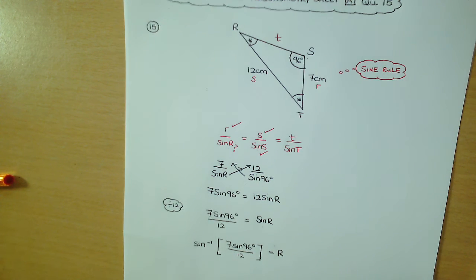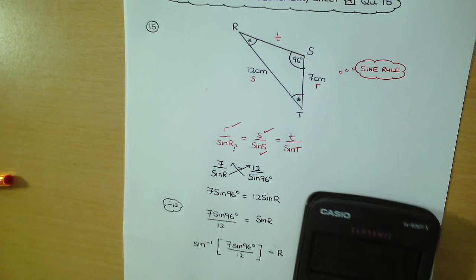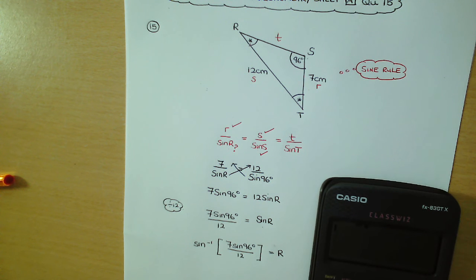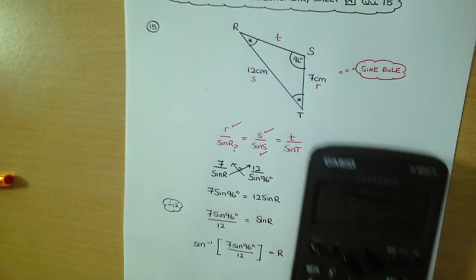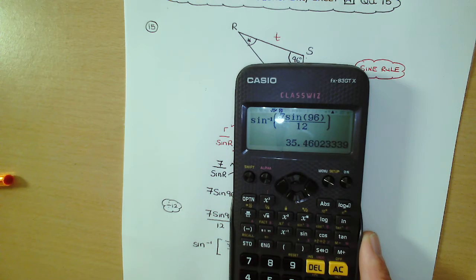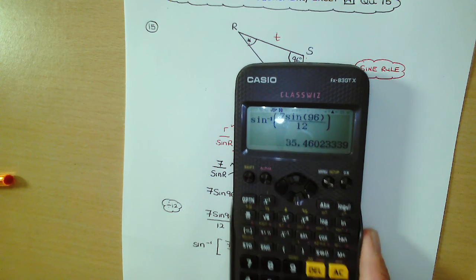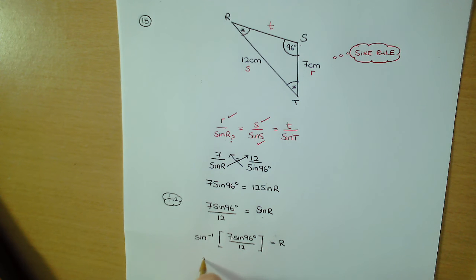Again, we're going to go to your calculator. We're going to make sure we're in degree mode. So shift sine, and then 7 sine 96, and then that's over 12, and then close the outer bracket, and then that's going to give us 35.460233.